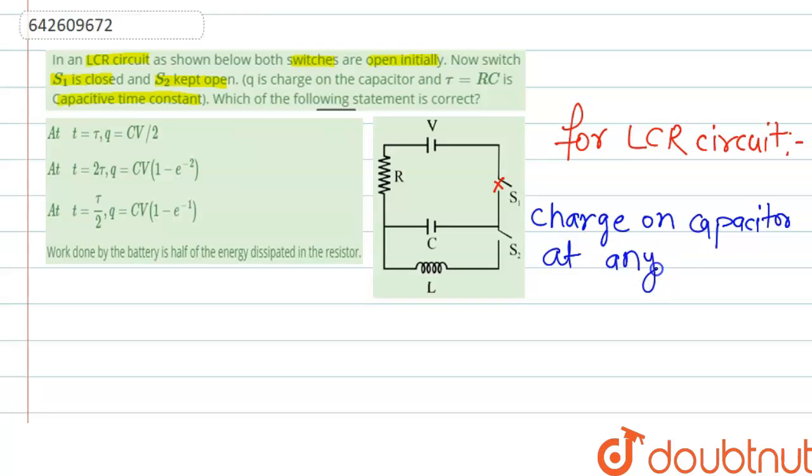Q equal to CV 1 minus e to the power minus T by tau.